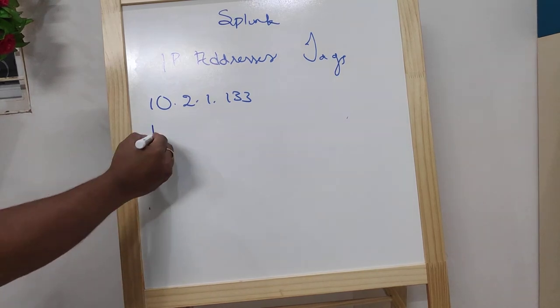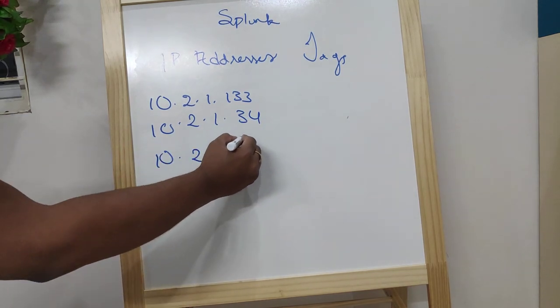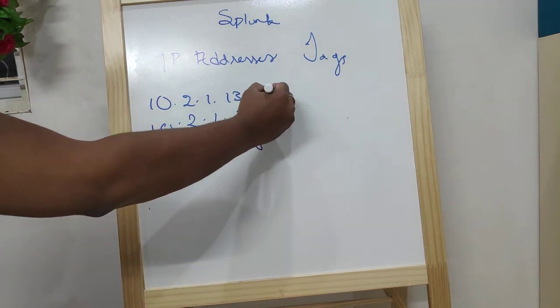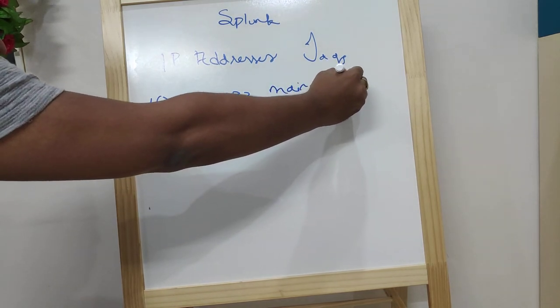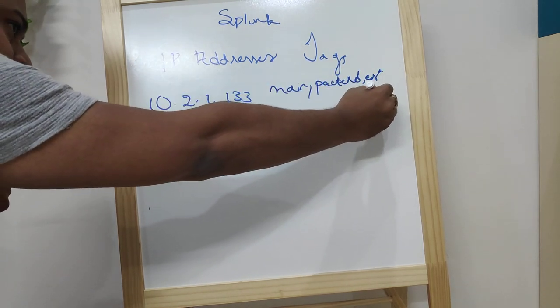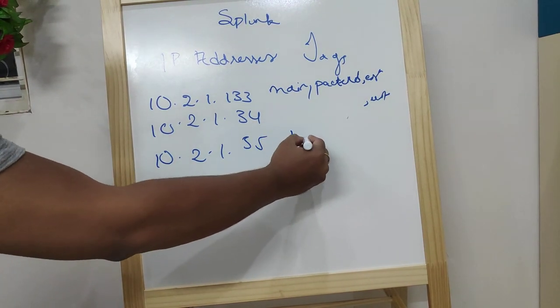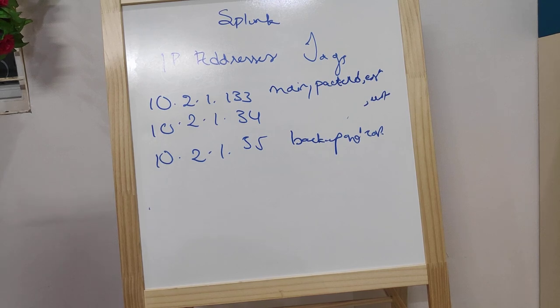For example, 10.2.1.34, 10.2.1.35. So you recommend IP addresses. Main patched, west main patched, and backup east.